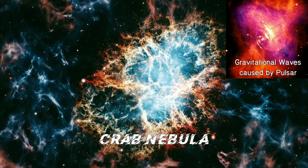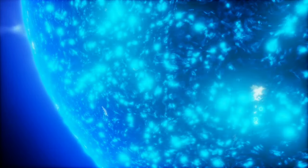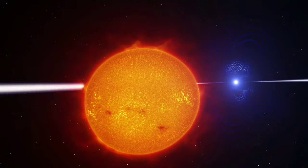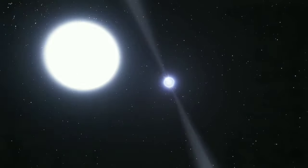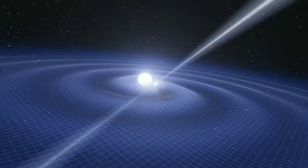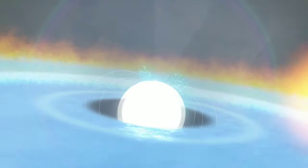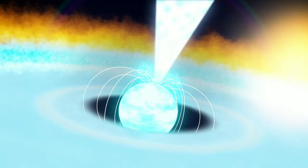The pulsar family tree is surprisingly diverse. Some pulsars spin so fast they're called millisecond pulsars, whizzing around hundreds of times every millisecond. Others play a cosmic game of tag with companion stars, forming binary pulsars. And some even emit beams of other types of radiation, like X-rays, making them X-ray pulsars.